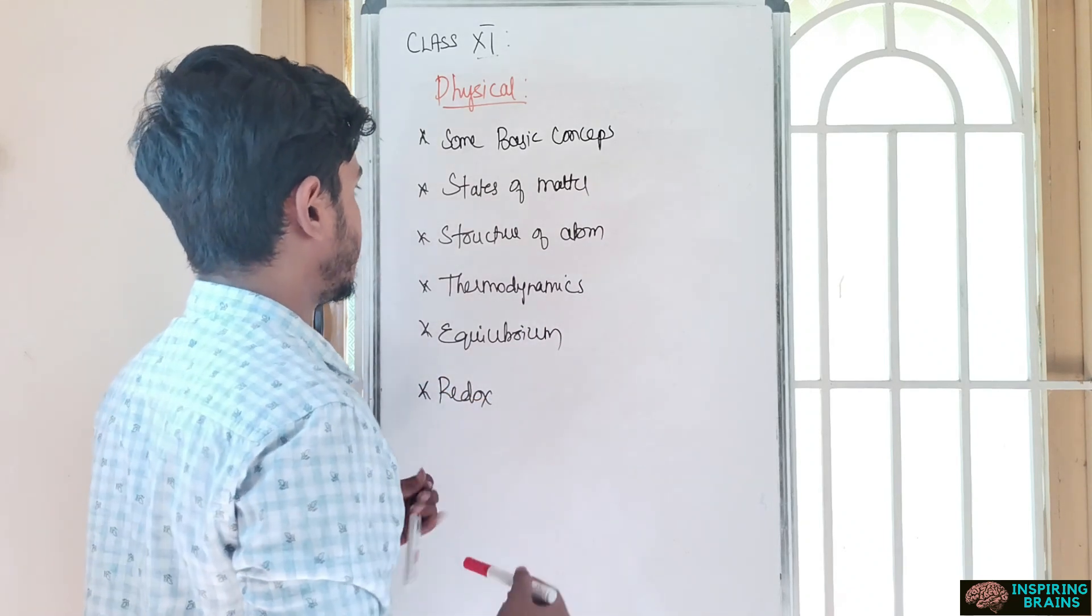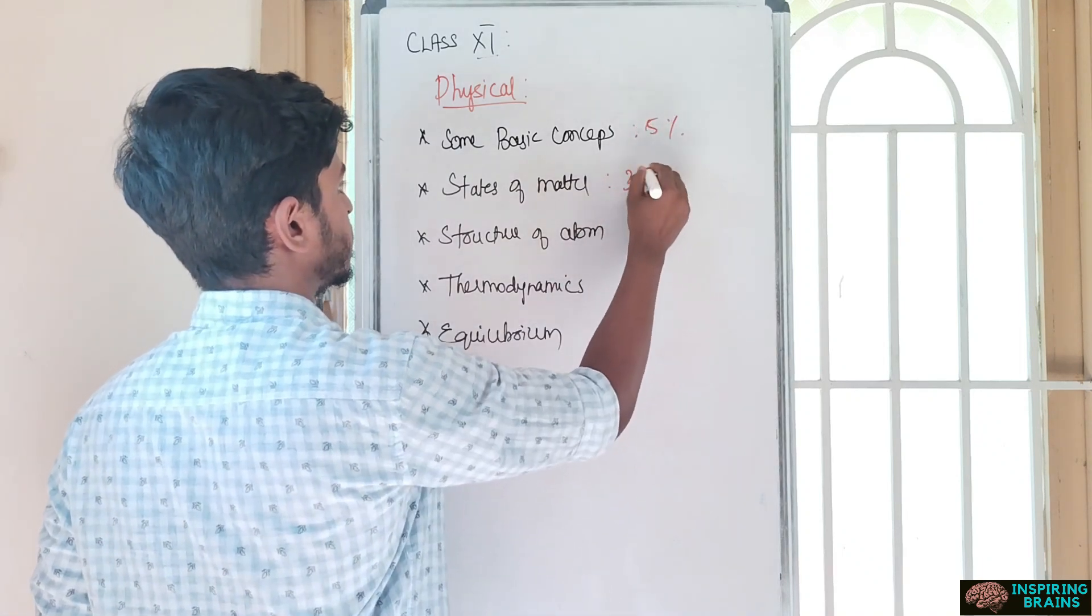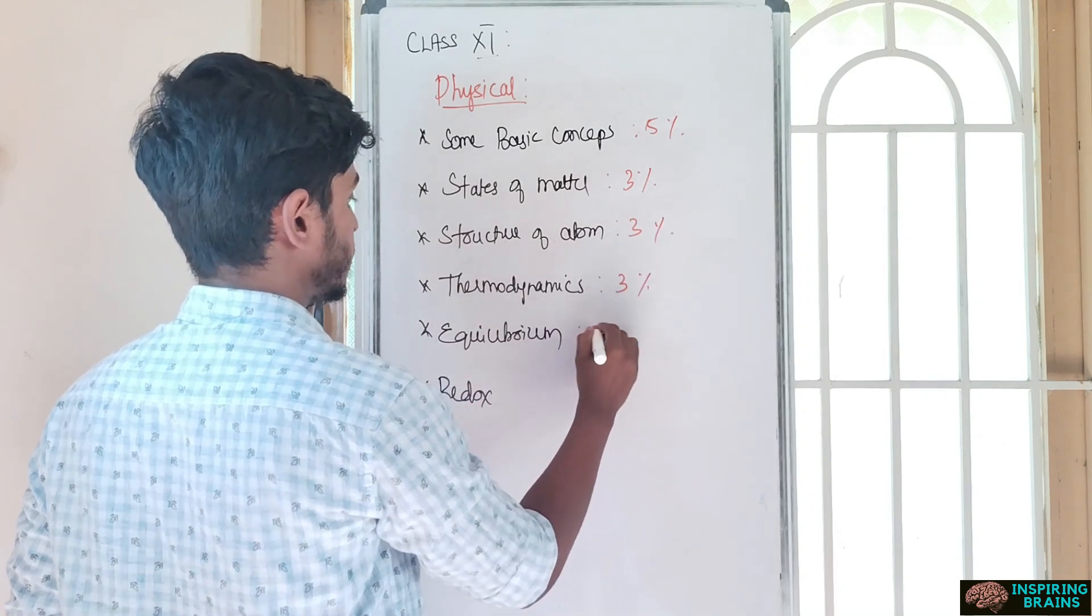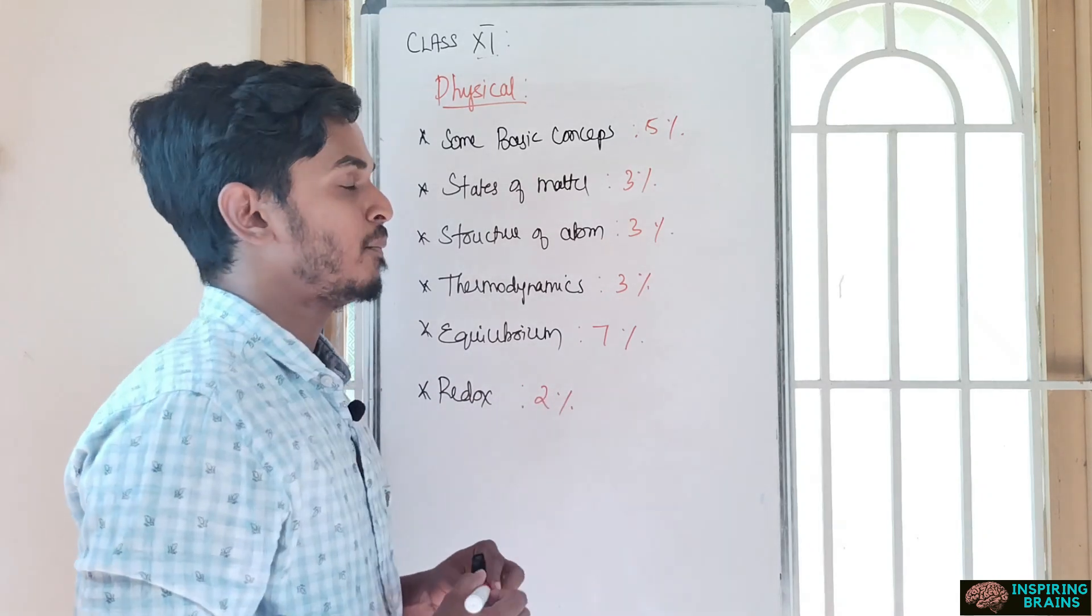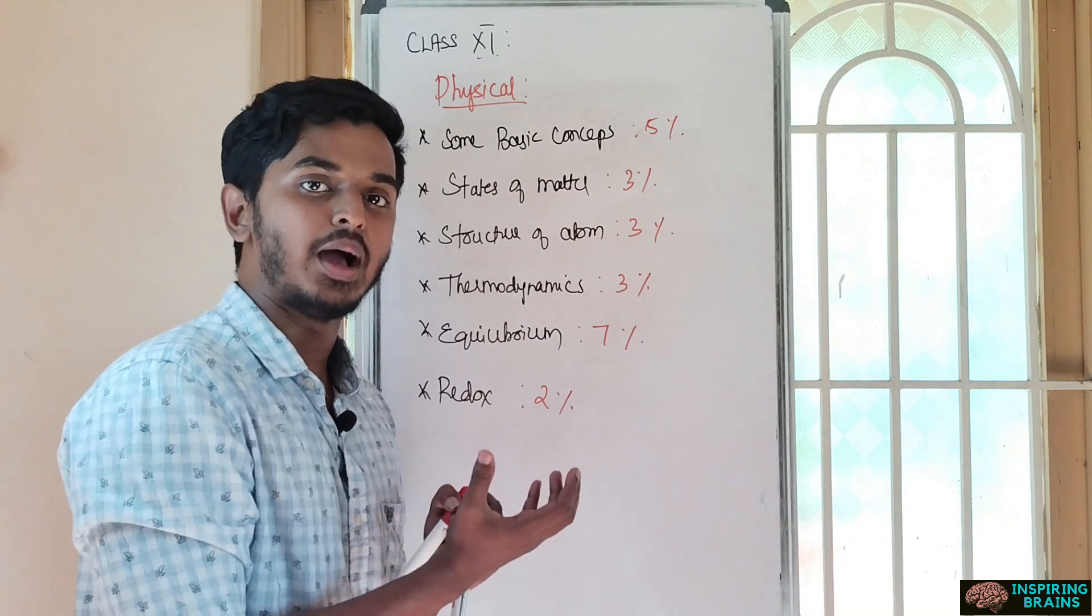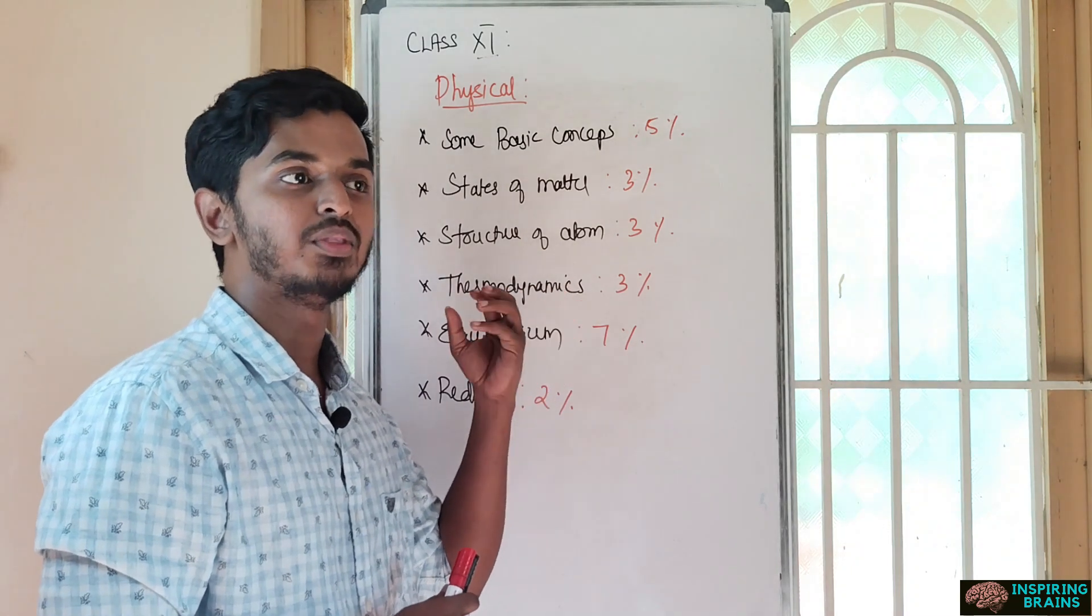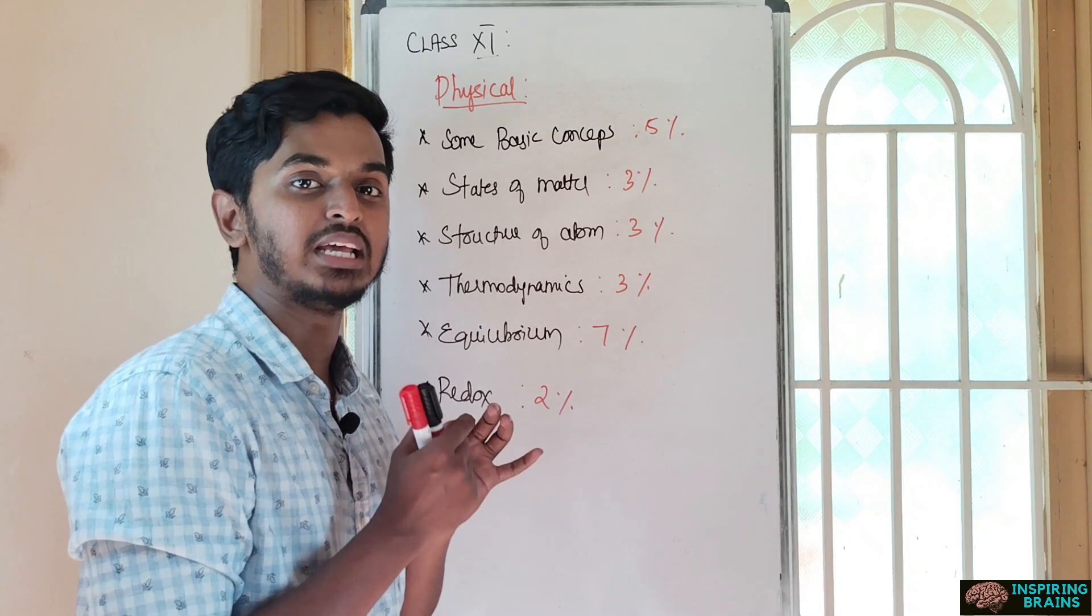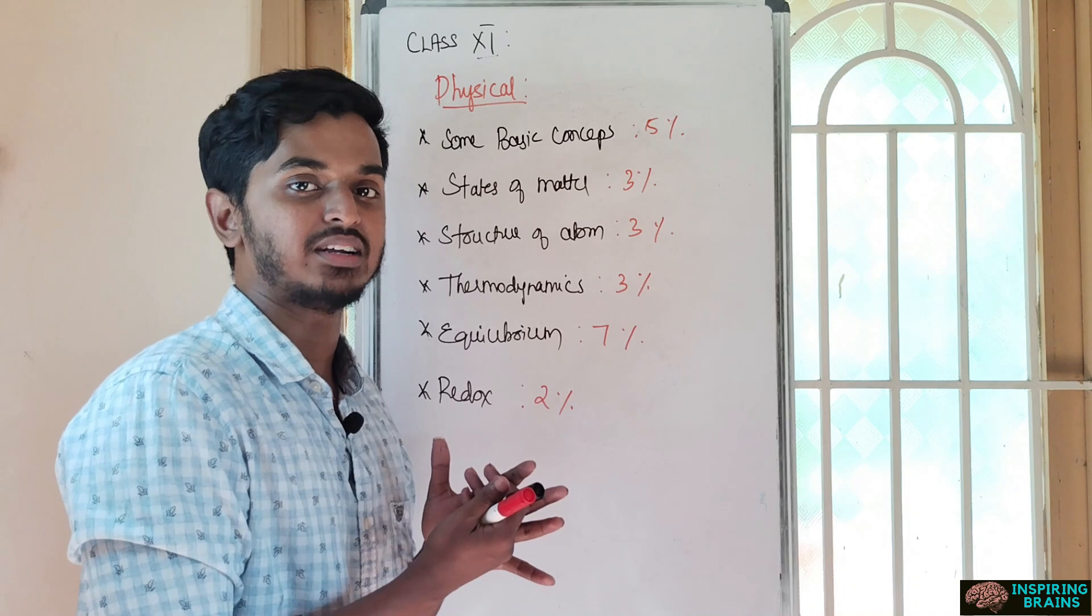Percentage - some basic concepts is 5%, states of matter 3%, structure of atom 3%, thermodynamics 3%, equilibrium 7%, and redox 2%. Some basic concepts of chemistry - you got some formulas where you can directly apply and get the answer, but many will feel it as difficult because it needs practice. You should know how precisely to apply the formulas. It's easy only when practiced.